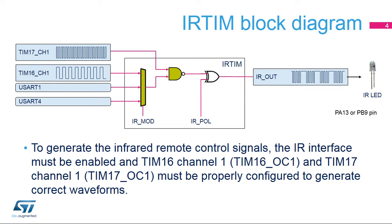TIM17 is used to generate the high-frequency carrier signal, while TIM16, or alternatively USART1 or USART4, generates the modulation envelope. The IR output signal can be driven on GPIOs PA13 or PB9.